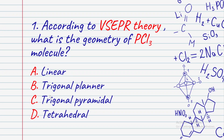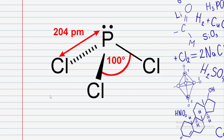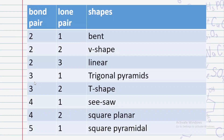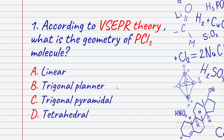It is not linear, and trigonal planar does not apply here either. Tetrahedral also does not apply. So what is the correct shape? PCl3 has three bond pairs and one lone pair. According to our B-L-T-T-S rule, three bond pairs and one lone pair → trigonal pyramidal. Therefore the answer is C: trigonal pyramidal.